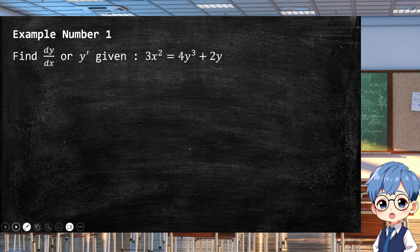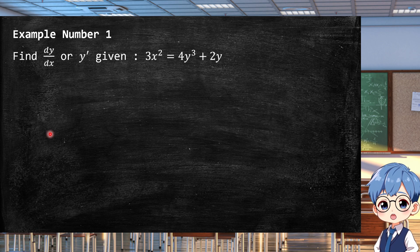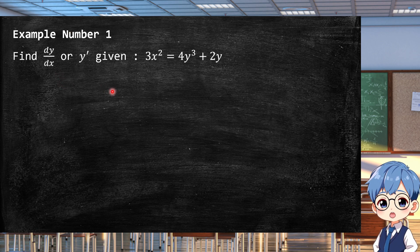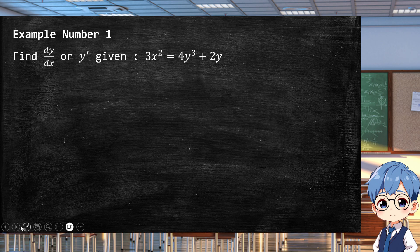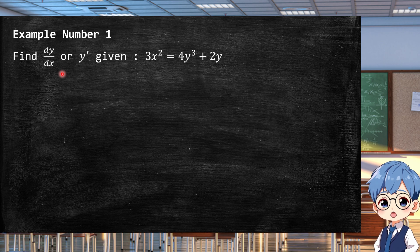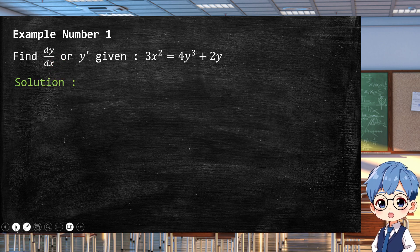Let's have some examples so we understand how to get the implicit differentiation of an equation. Find dy/dx or y-prime given 3x² = 4y³ + 2y. We just need to understand the derivative operator, which depends on what you are looking for. In this scenario we are looking for dy/dx, hence our derivative operator is d/dx.